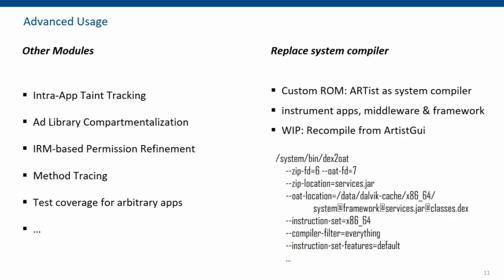You can also use ARTIS to replace the system compiler, allowing you to re-instrument the system server and the boot OAT file — essentially the framework classes of Android. Whatever runs on Java on Android is compiled through Dex2Oat, so this is within reach for ARTIS. We're currently working on doing this from the ARTIS GUI wrapper so you don't have to create a custom ROM, but it's a work in progress.